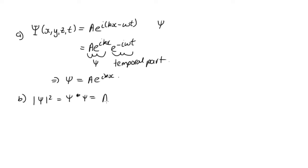So ψ*, we have Ae^-ikx, taking the complex conjugate, so putting a minus in front of the i. And then times ψ, which is Ae^ikx. So this is equal to A²e^-ikx+ikx. And this is 0. So this is equal to A²e^0.